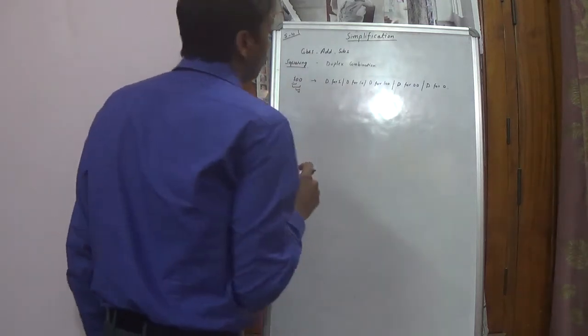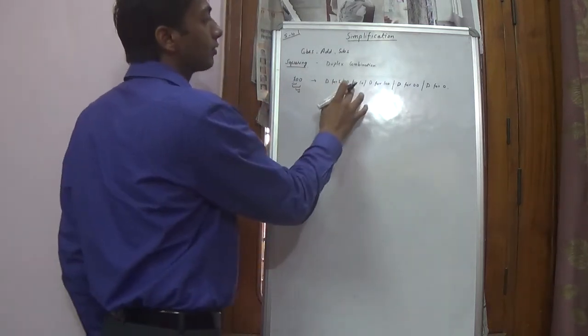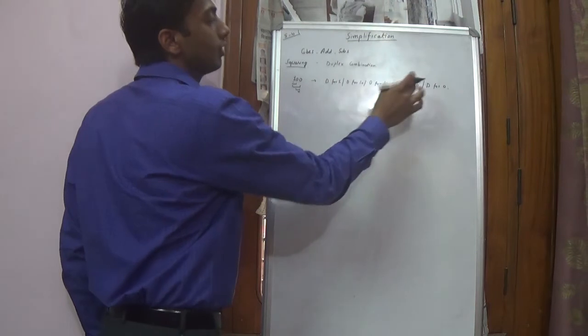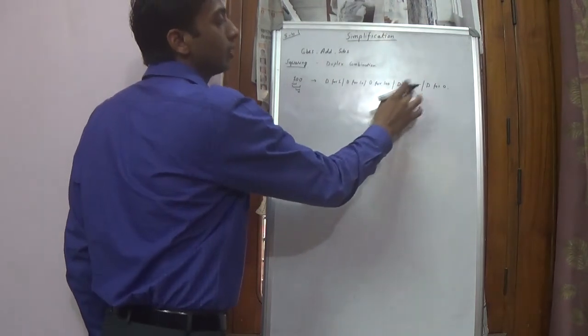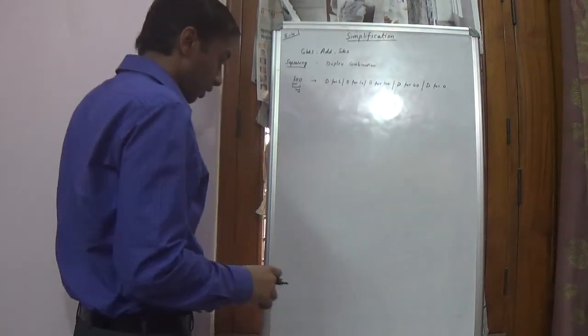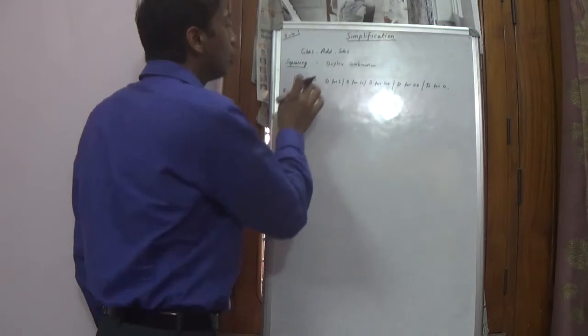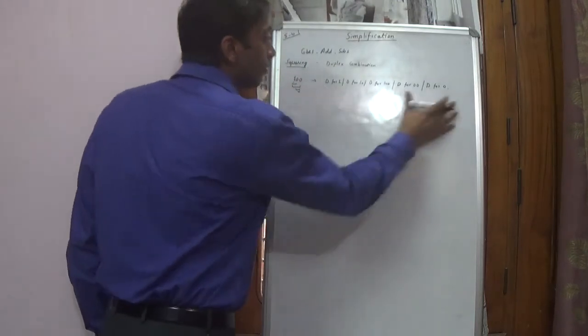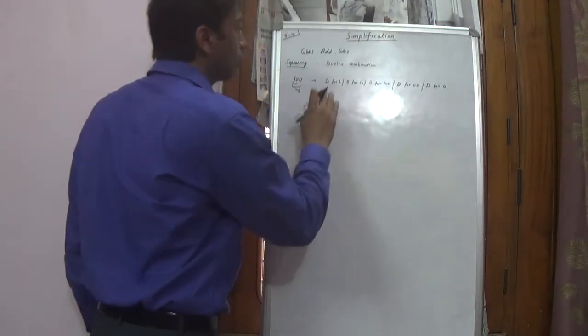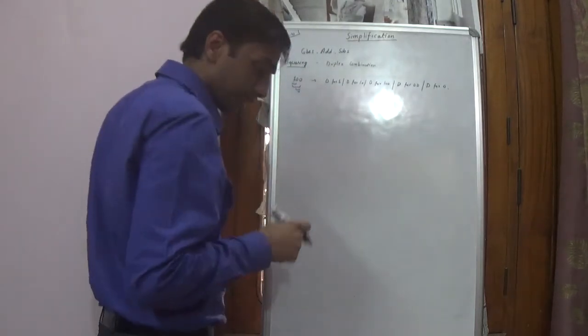This is how we move through the digits. So we get: duplex for 1, plus duplex for 10, plus duplex for 100, plus duplex for 00, plus duplex for 0. This is how we get the final answer. But what is duplex, and how do you calculate it?